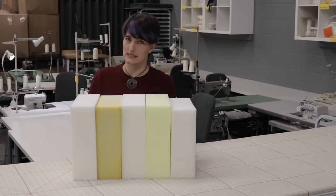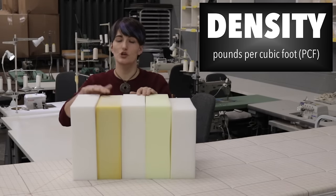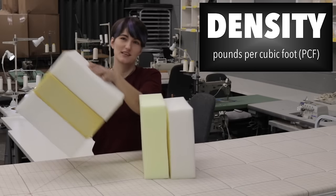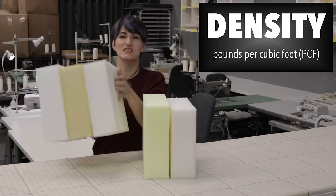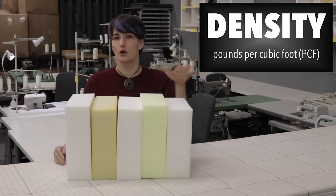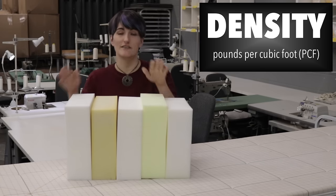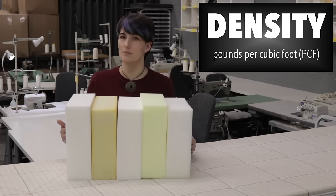The other number to consider is the density, and that tells you how much a foam weighs per cubic foot, 12 inches by 12 inches by 12 inches. And that can vary quite a lot from foam to foam. A low density foam might only weigh a pound per cubic foot, while a very high density foam can weigh upwards of three pounds.